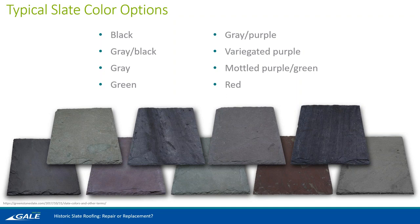When we talk about slate, there are all sorts of different colors, and different regions are famous for the colors available there. Vermont is pretty well known for gray, black, green, and purple varieties of slate. New York is relatively famous for the bright red colored slate, and that's believed to be the only area where you can find that color of slate today.